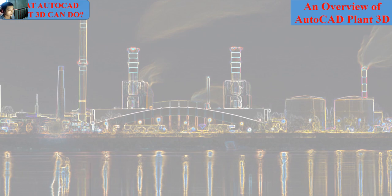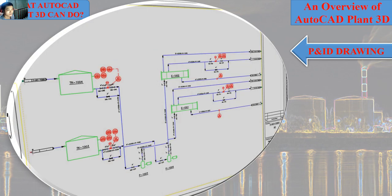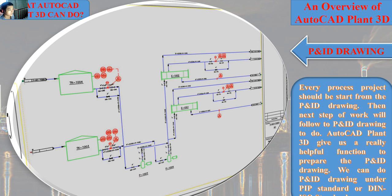The first thing AutoCAD Plant 3D can do is prepare the P&ID drawing. Every process project should start from the P&ID drawing, and the next steps of work will follow from it. In AutoCAD Plant 3D we can prepare the P&ID drawing quickly, and we can also create it under the P&ID standard or ISO standard.